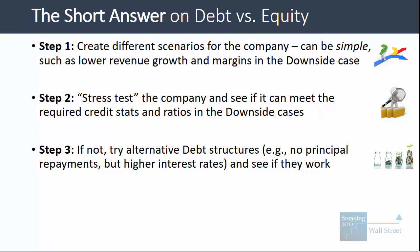If the company can meet its credit requirements, you can go with the form and type of debt financing it wants to use. If not, you'll have to try alternative debt structures. For example, if the company wants to use term loans to take advantage of lower interest rates but runs into trouble with certain credit stats and ratios, you could instead propose a package with no principal repayments but higher interest rates, and check whether the company can meet its credit stats and ratios under that structure.